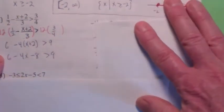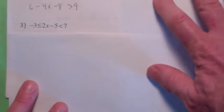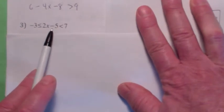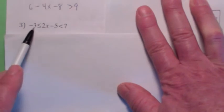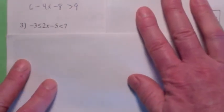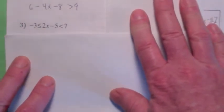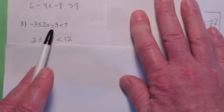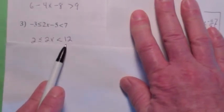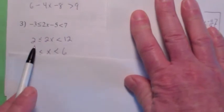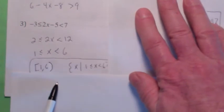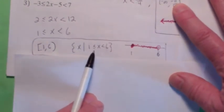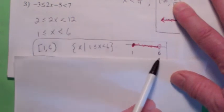Let's do one more. This is called a compound inequality. It means two things: it means negative 3 is less than or equal to 2x minus 5, and at the same time 2x minus 5 is less than 7. So 2x minus 5 is between negative 3 and 7. The way you solve it is the same way — think of there as being three sides. You add 5 to all three things, so this becomes 2, this becomes 2x, this becomes 12. Then when you divide by 2, this becomes 1, this becomes x, this becomes 6. So the solution is closed on 1, open on 6. Set of all x such that 1 is less than or equal to x is less than 6. And it would be everything between 1 and 6, closed on 1, open on 6.